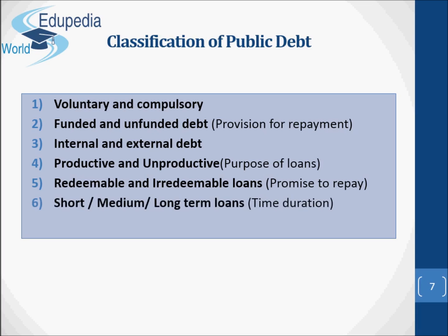Sixth, short, medium and long-term loans, based on time duration. Short-term loans are usually incurred for a period varying from three months to one year; governments typically get such loans from the central bank using treasury bills, and these are called ways and means advances. Medium-term loans are obtained for more than one year but less than 10 years. Long-term loans are those obtained for more than 10 years and are used to finance development activities, such as the line of credits given by the European Investment Bank.